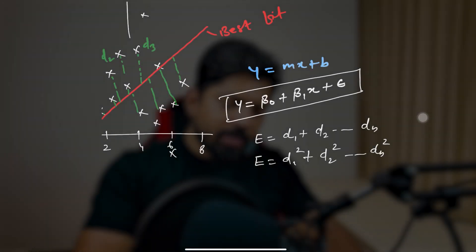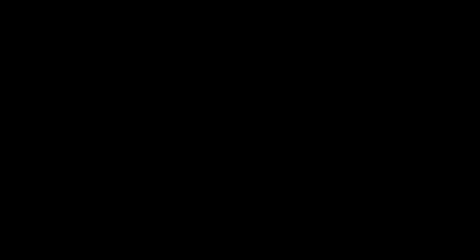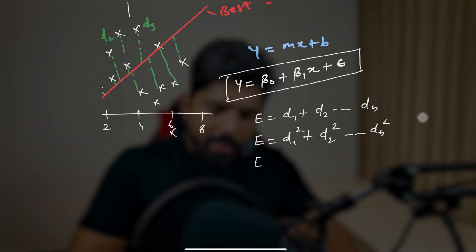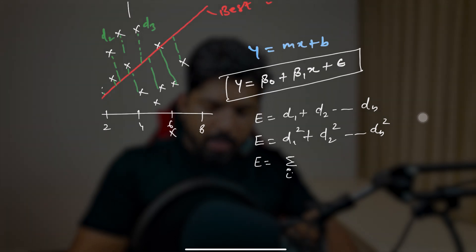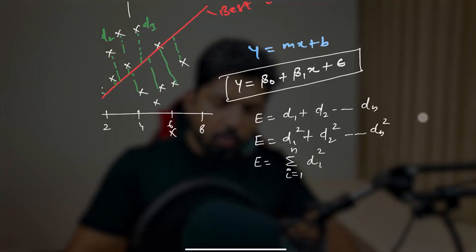So that's why we square the values. We can write the summation as: i from 1 to n of dᵢ squared. Hopefully you are able to understand.